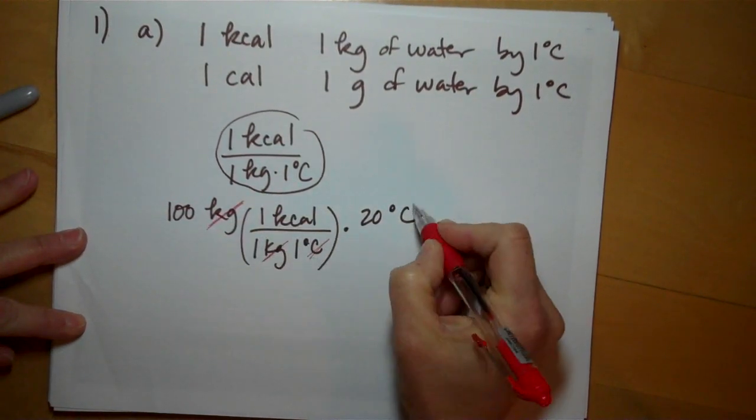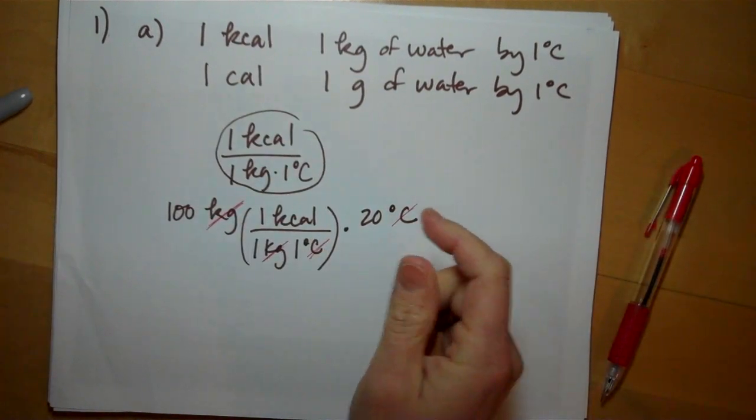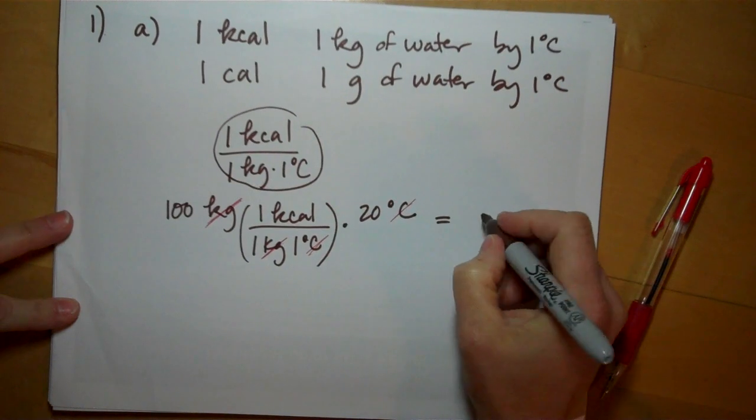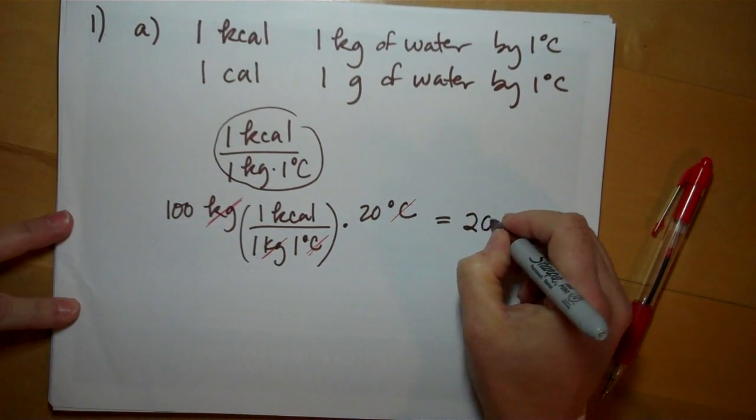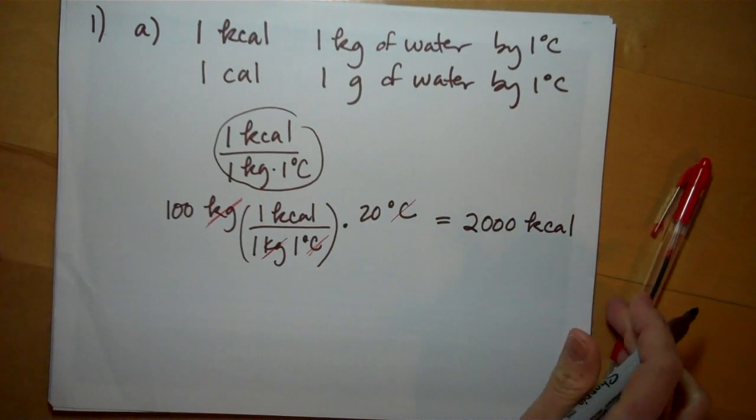Kilograms would cancel, degrees Celsius would cancel, and you could just do the math in your head. A hundred times two times twenty works out to two thousand kilocalories.